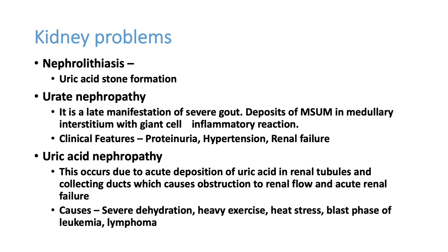Regarding kidney problems, gout classically presents as renal stones, but some patients can have urate nephropathy as well. Uric acid crystals can infiltrate the renal system causing renal failure, presenting with proteinuria, hypertension, and renal failure. High uric acid can precipitate renal failure, and renal failure can produce high uric acid — but the commonest presentation is renal stones.